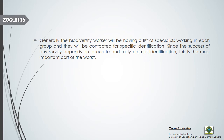In survey collections, you first decide what to survey — a particular area or a particular group of organisms. Then a list of specialists is assembled for different groups, because when surveying biodiversity of an area, you need specialists for each group. The success of any survey depends on accurate and fairly prompt identification, which is the most important part of the work.